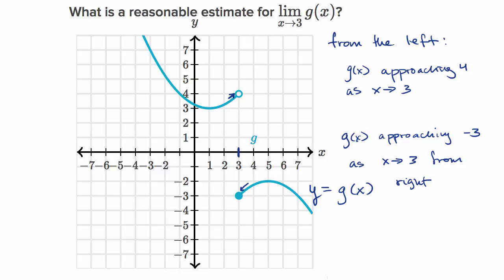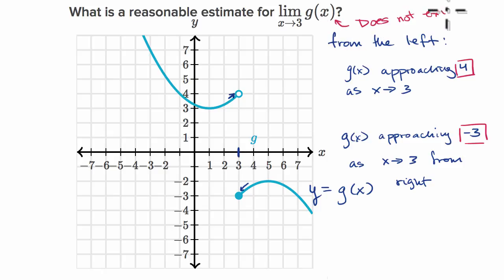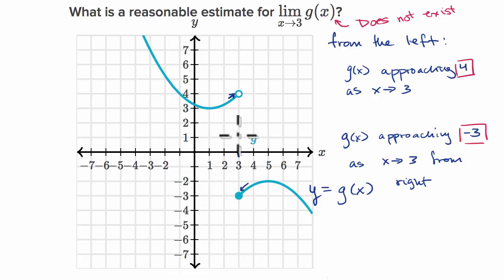So we have two different values here. When we approach from the left, it looks like g of x is approaching four. And when we approach from the right, it looks like g of x is approaching negative three. Because of that, we would say that this limit doesn't exist — it does not exist based on looking at this graph. A good clue that it won't exist is the x value where we're trying to find the limit: you see this jump in the graph right here. It is discontinuous — it jumps from one value to another, which is a good clue that the limit might not exist.